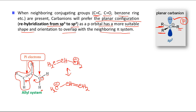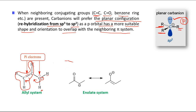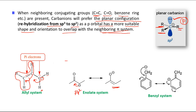To achieve this type of conjugation, which is a source of stability, sp2 hybridization is required. Another example is the enolate system: in the enolate, the carbanion carbon must be sp2 hybridized so that the lone pair electrons are in the p orbital and can take part in conjugation with the neighboring pi system like C=O. This is possible only when the lone pair is in the p orbital.